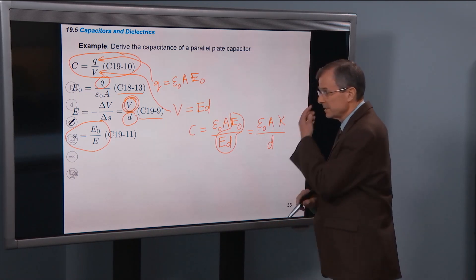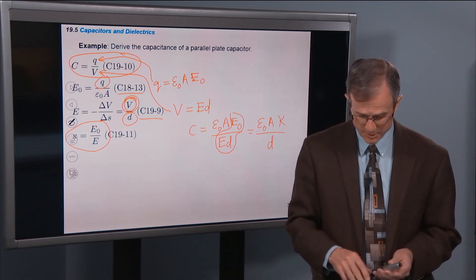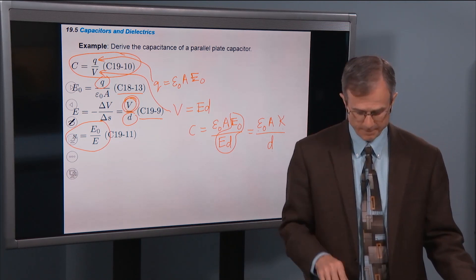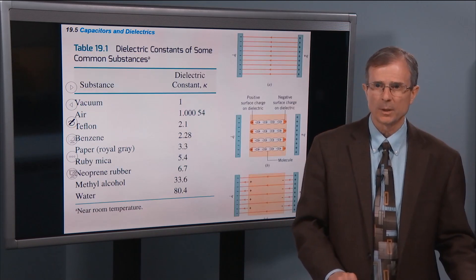Kappa ε0A divided by D. That's the capacitance of a parallel plate capacitor. If you'd like to memorize this derivation you're certainly welcome to. It just combines the various concepts. But I wanted you to see where it all comes from.